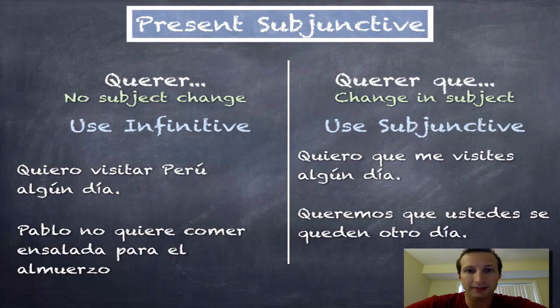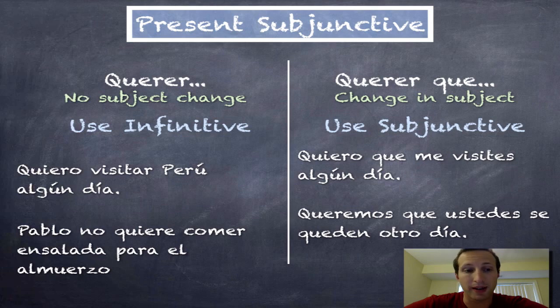Now we're going to talk about the present subjunctive and using the verb querer. The verb querer, as we already saw, can be used with no subject change to say things that the subject wants to do.